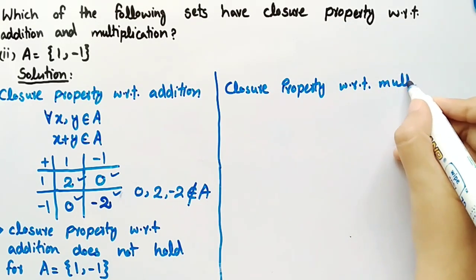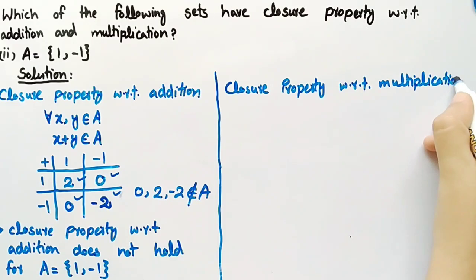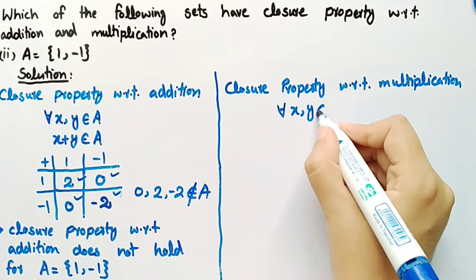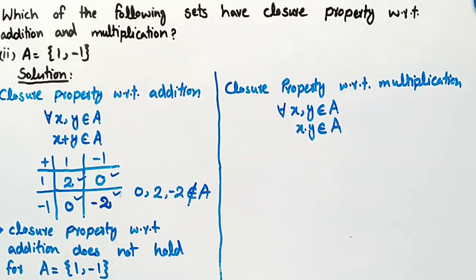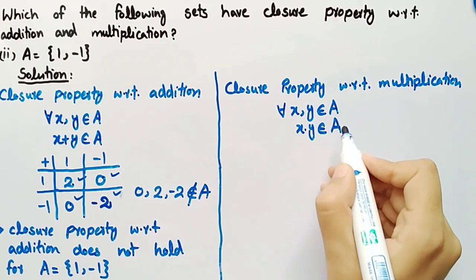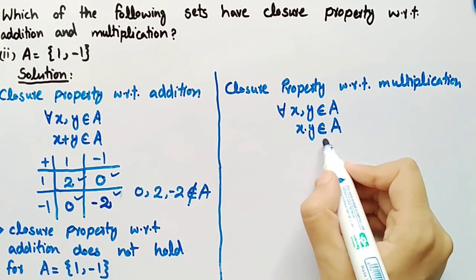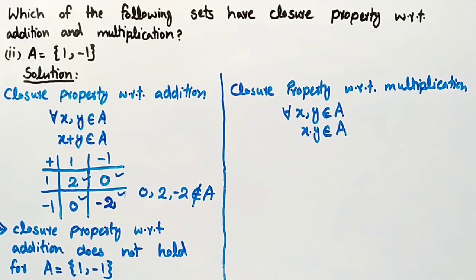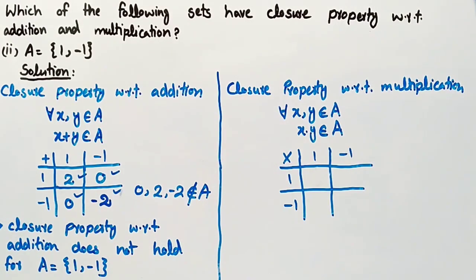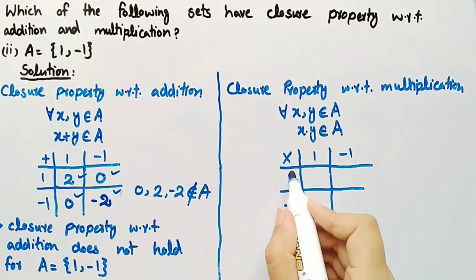Now we will check closure property with respect to multiplication. Its definition is: for all x, y belonging to set A, x · y must also belong to set A. It means that if we multiply each element of set A one by one with each other element of set A, its product must also be in set A. Then we can say that set A satisfies closure property with respect to multiplication. Now we will construct a table with all elements of set A in the first row and first column.